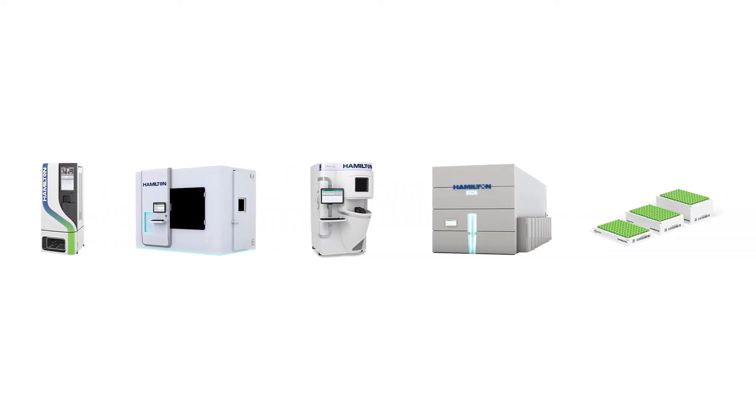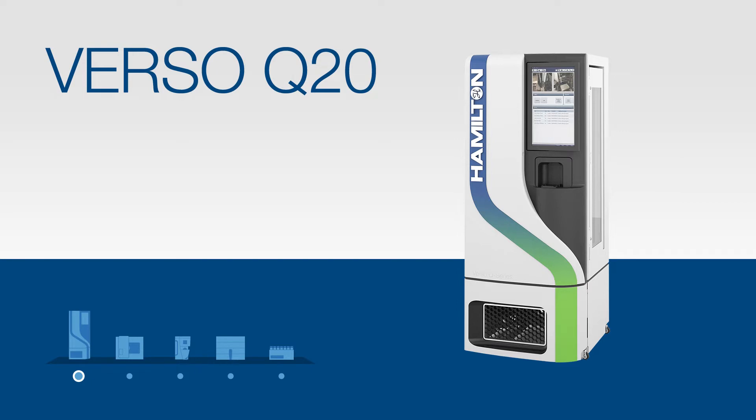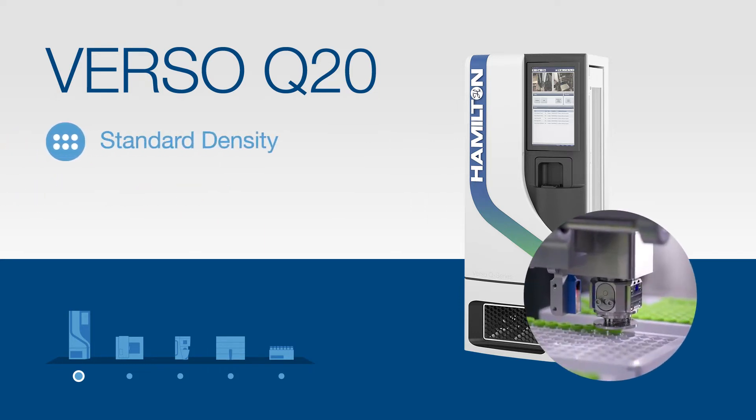In addition to our LabElite line of benchtop devices, Hamilton Storage offers ultra-low temperature automated sample management systems. We start with Verso Q20, a compact automated sample management system for sample storage at temperatures ranging from ambient to negative 20 degrees Celsius. The Q20 offers a sample capacity of 15,000 to 36,000 depending on types of labware being stored. This compact system was designed with convenience in mind, perfectly sized for even the smallest labs.